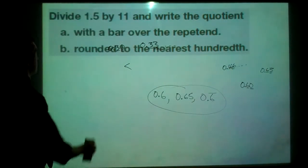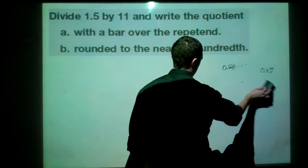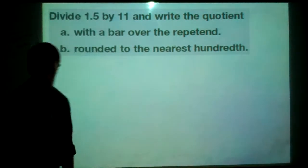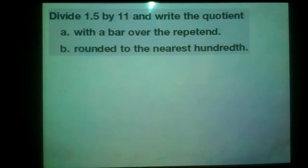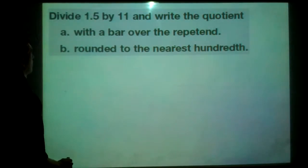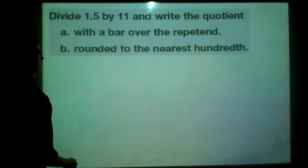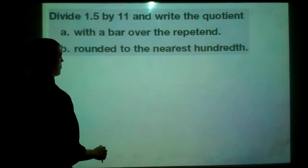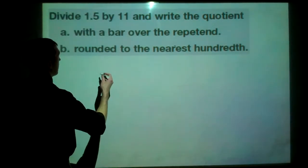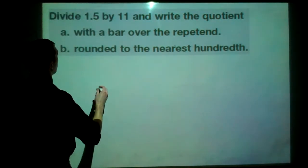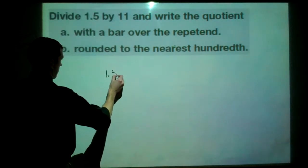I believe this is our last example. And, I want to see what time we have left. About 3 minutes. So, we're going to divide 1.5 by 11 and write the quotient with a bar, and then, also, rounded to the nearest hundredth. And, I will go through this quick. Divide 1.5 by 11.